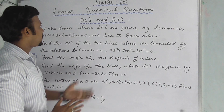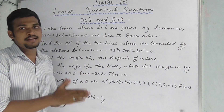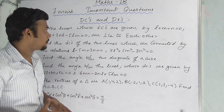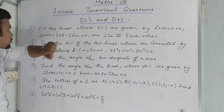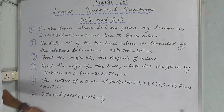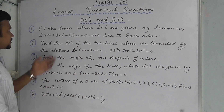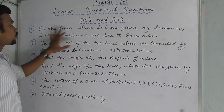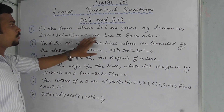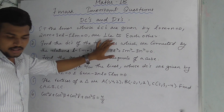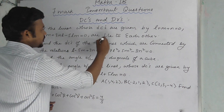Now we will go to the next chapter: DCs and DRs — direction cosines and direction ratios. There are 6 important questions here. The lines whose DCs are given, where two lines are perpendicular to each other — this is a standard model. The lines are connected by given relations.